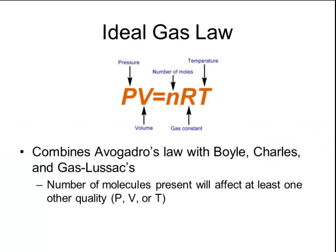By combining Avogadro's law with Boyle's law, Charles' law, and Gay-Lussac's law, we come up with an equation called the ideal gas law, written as PV equals nRT, where n is the number of moles of particles. This number is important because the number of molecules present will affect at least one of the other qualities. If I increase the number of moles of gas in a rigid container, the pressure inside will go up because there are more particles colliding with the sides. If I increase the number of moles in a flexible container like a balloon, then the volume will also increase.